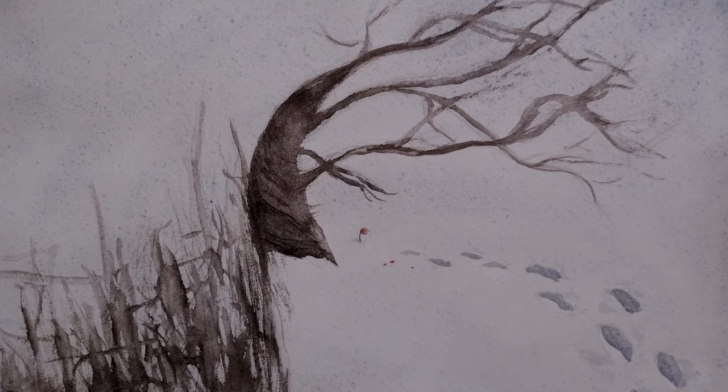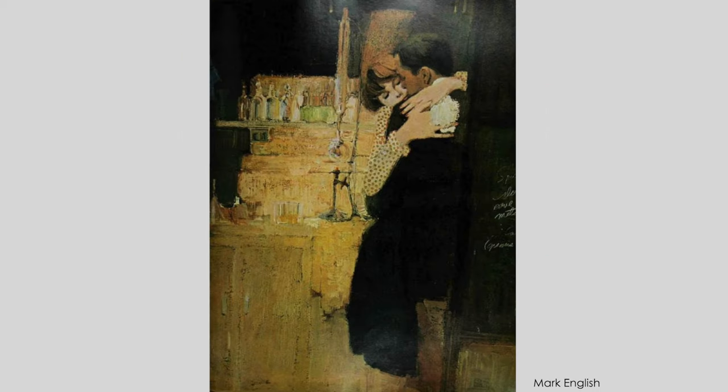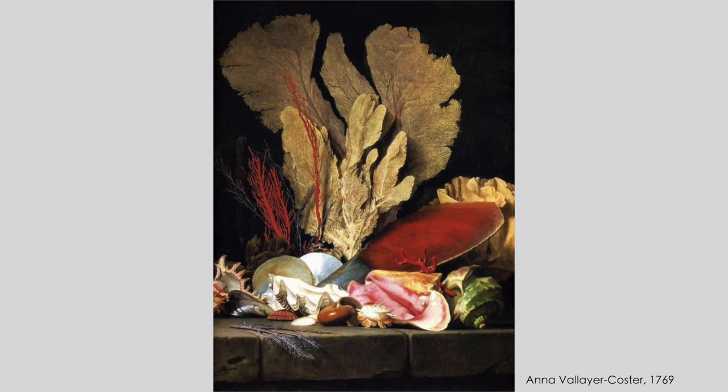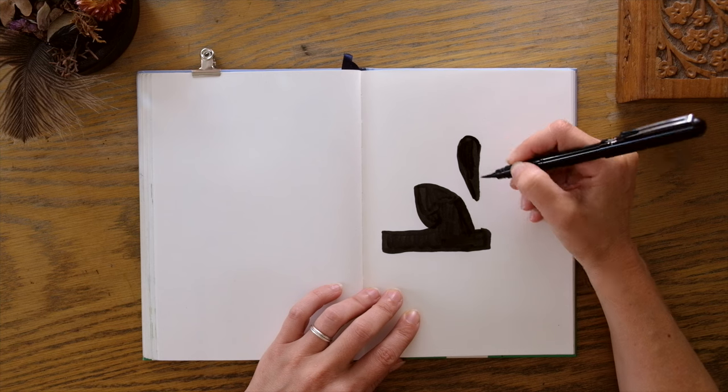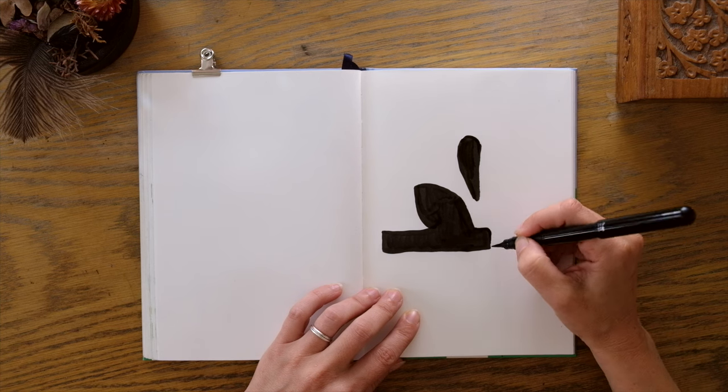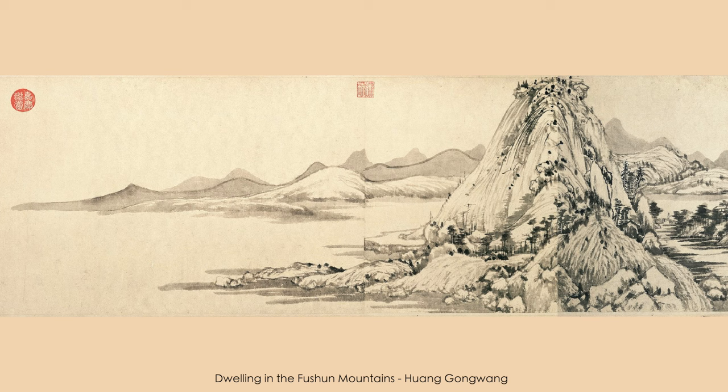Today I'm going to be teaching you exactly that — one of these basic, fundamental composition principles, which is the concept of notan: the balance between light and dark, and how this contrast will really improve the artworks that you create.